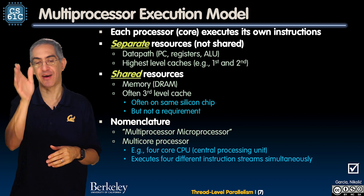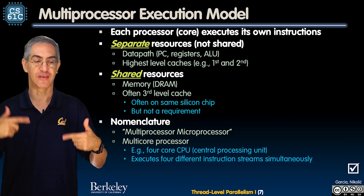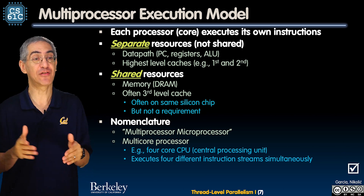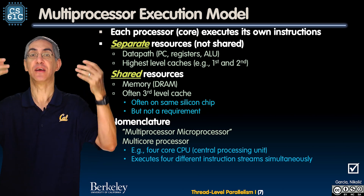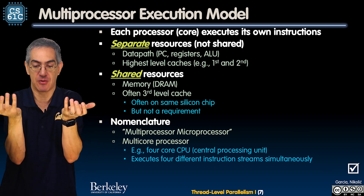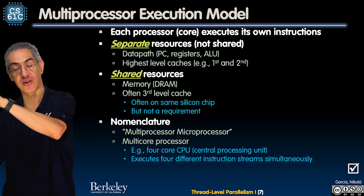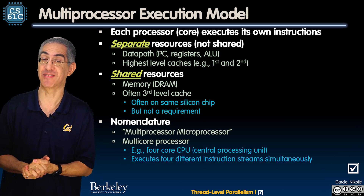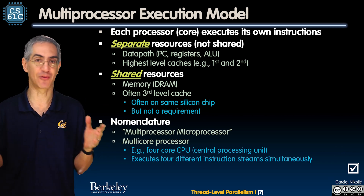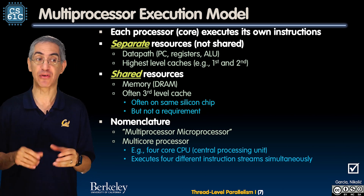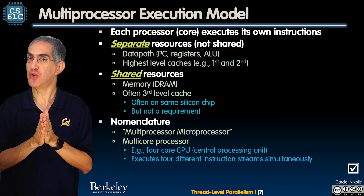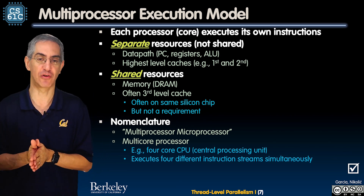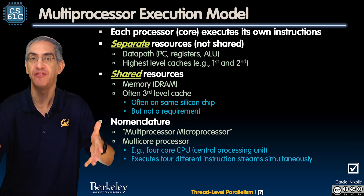Each processor executes its own instruction stream, running in parallel. Separate resources: data path, PC, registers, ALU. The highest level caches are also separate — your L1 and L2 save you from going to main memory on every request. Memory is a shared resource and is expensive, so you don't duplicate it per core. You will typically duplicate L1 and L2, and L3 — usually in the megabytes — is usually shared, though not required. It's often on the same silicon chip. All of this falls under a multiprocessor execution model.